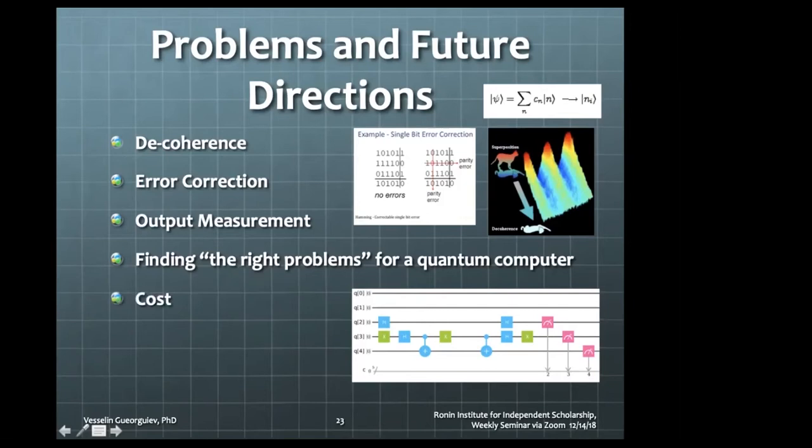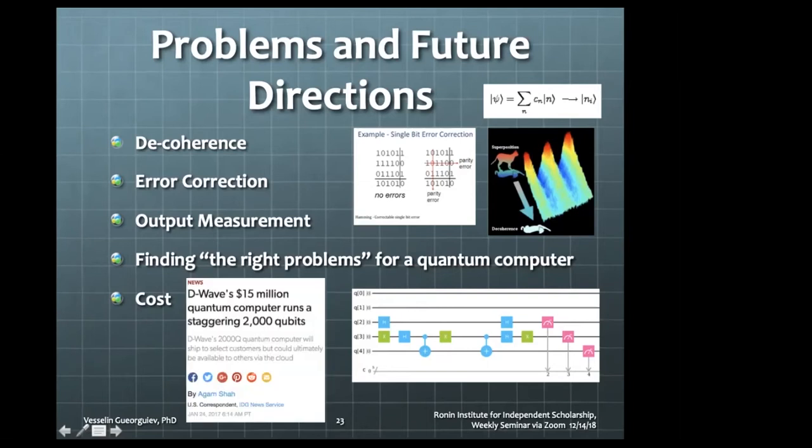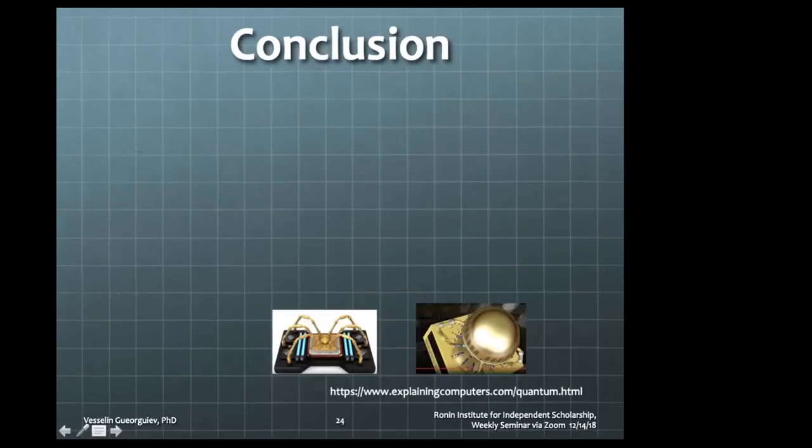And, always, the important problem is the cost. For example, the D-Wave that I showed the picture, it sold for 15 million. That means that this is about $7,000 per qubit. So, this is much more than what you have for your own laptop, even a server, or like a moderate machine in a university or company. So, these are the problems.